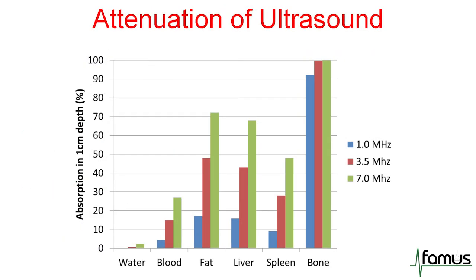The next graph shows the absorption of ultrasound in one centimeter of depth between different tissues and different frequencies. What is immediately obvious is that bone, even with low frequencies, absorbs more than 90% of all the ultrasound in one centimeter of depth. At medium or high frequencies, all ultrasound is lost. Water and blood, on the other hand, don't absorb much ultrasound at all, making water a perfect window to look at deeper areas.